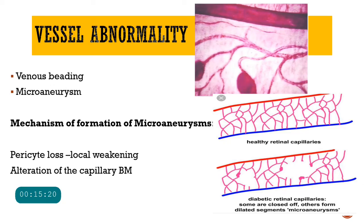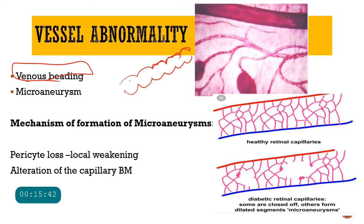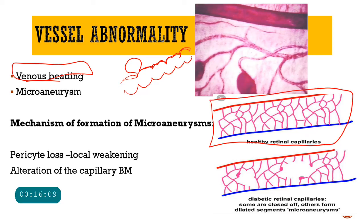Looking at abnormalities visible in blood vessels: as pericytes are lost and they form the structural framework of the vessel, the vessel can no longer maintain its normal shape and is thrown into bead-like structures — this is called venous beading, quite commonly seen in diabetic retinopathy. Sometimes this beading becomes exaggerated and there is a vascular outpouching from the blood vessel, called a microaneurysm. The mechanism is pericyte loss causing local weakening and outpouching. As seen in retinal images, areas with no capillaries are called capillary non-perfusion areas, where capillaries have occluded or formed microaneurysms causing ischemia.